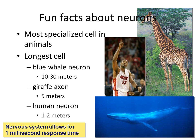Neurons are the most specialized cells in animals. If you consider the brain, which is responsible for thinking, it is a very important part of many living animals. The longest neuron in the world is found in the blue whale, which is between 10 and 30 meters, found in the spinal cord connecting its brain to the very back of the body towards its back fin. The giraffe axon is 5 meters long and travels down the length of its neck. The human neuron is 1 to 2 meters long and is found down the spinal cord that connects the brain with the rest of the body.